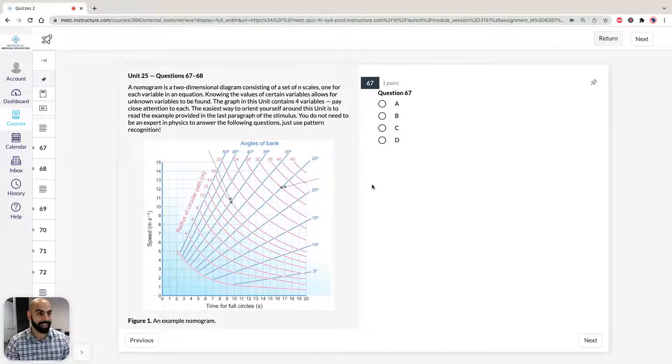In this unit, we are looking at how birds are able to soar, that is, fly without flapping their wings. We've been provided with a nomogram, which is a two-dimensional diagram consisting of a set of scales. In this unit, we have four points: speed, time for four circles, radius of the circular path, and angle of bank. Knowing the values of certain variables allows for unknown variables to be found, which is pretty much what this unit wants us to do.